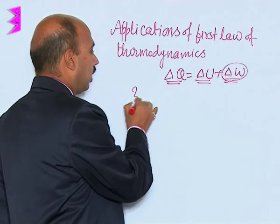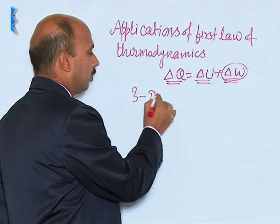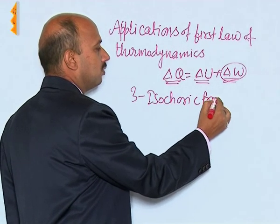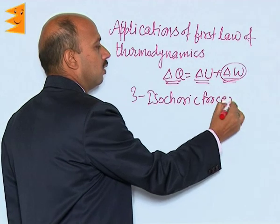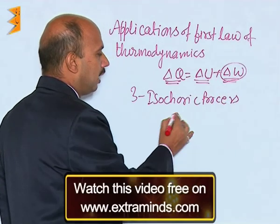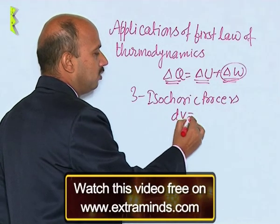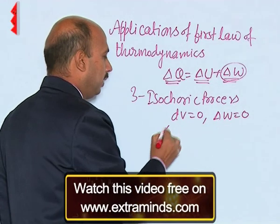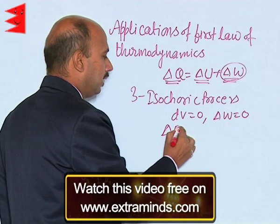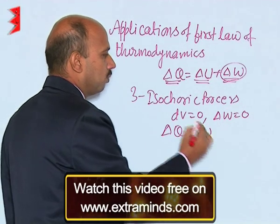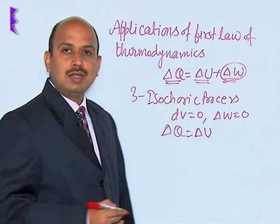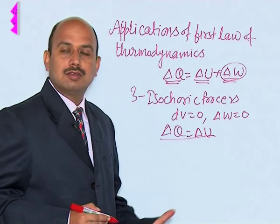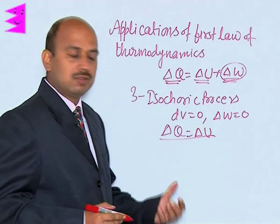The third one is the isochoric process. Isochoric process means volume remains constant, so dV is equal to 0, which means delta W is equal to 0. Therefore, delta Q is equal to delta U — whatever heat is supplied in this process is used entirely to increase the internal energy of the system.